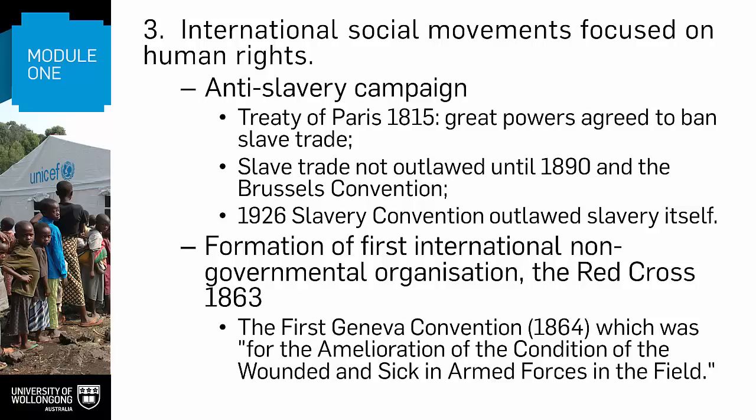These are some early examples of international agreements between states, and they happened thanks to groups of concerned citizens organising and pressuring their governments — in other words, thanks to social movements. An equally powerful example of this is the formation of the Red Cross. This occurred after a Swiss businessman named Henri Dunant was horrified by the lack of care for wounded soldiers that he witnessed during the Battle of Solferino in 1859.